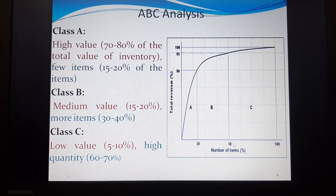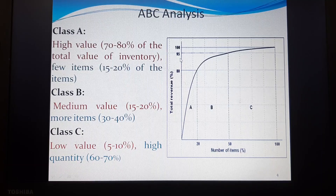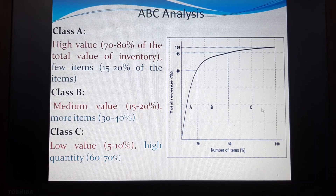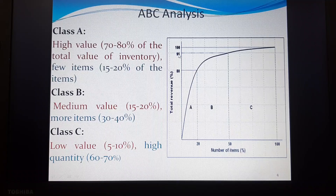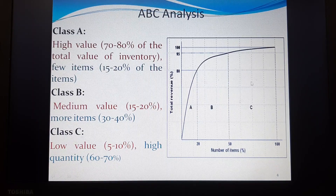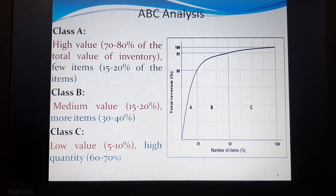In Class B, there are relatively more items — almost 30 percent of items — but they have a medium value, approximately 15 to 20 percent of total inventory value. Class C has very low value — only about 5 to 10 percent of value — but a high number of items. Around 50 to 60 percent of all items belong to Class C, which has the least value.